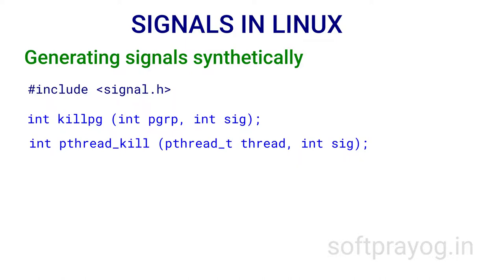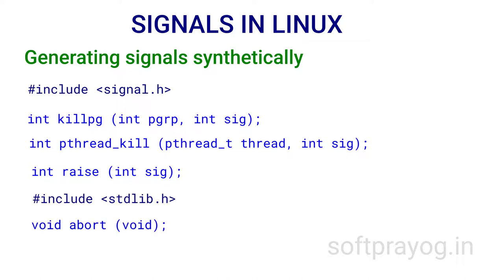pthread_kill sends a signal to the thread identified by the first parameter; the receiving thread must be part of the calling thread's process. If the signal is intended to terminate the receiving thread, the entire process gets terminated — so the right way to terminate a thread is to use pthread_cancel. raise is a function to send a signal to the calling thread — that is, a thread sends a signal to itself. The abort function generates SIGABRT for the calling process and causes its own abnormal termination; the abort call never returns.